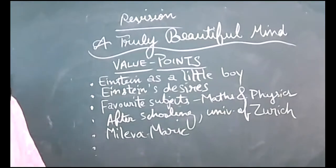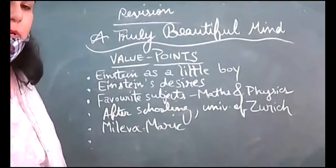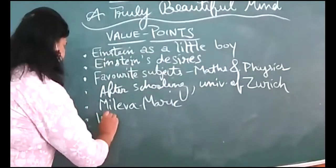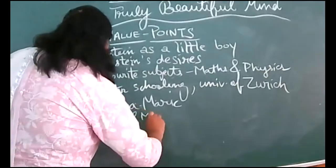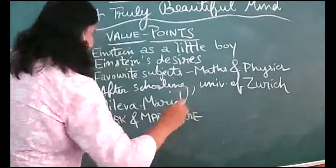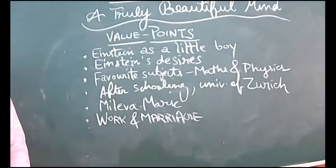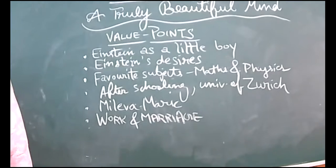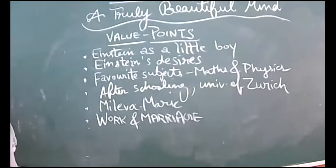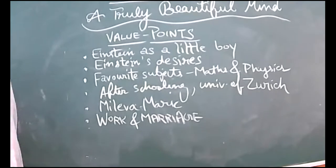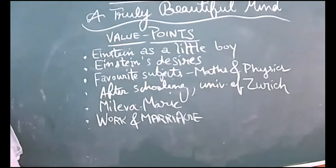Then after this I'm going to tell you about his work and marriage—next point you can write down. When he meets Mileva Maric we'll talk about work and marriage, what sort of works he did and about his married life. At the age of twenty-one, Einstein worked as a technical assistant and also grabbed the job of technical expert. It's an achievement if a person is getting a job at age 21, a very young age.